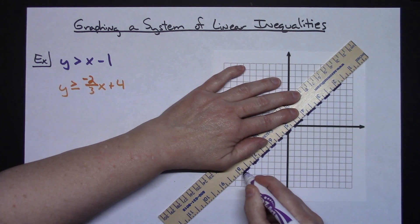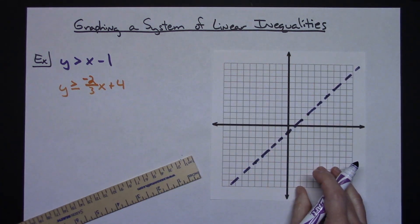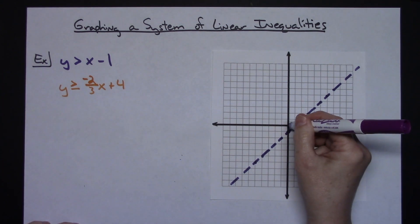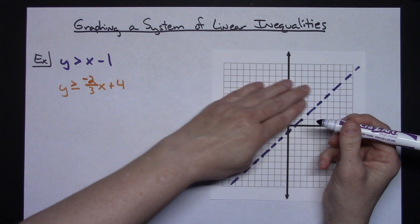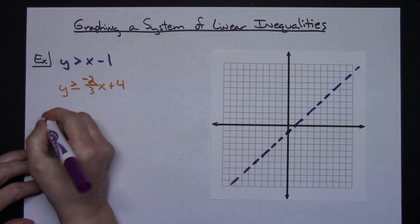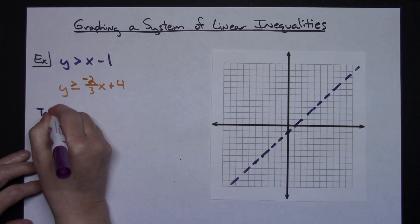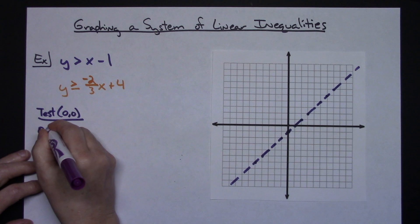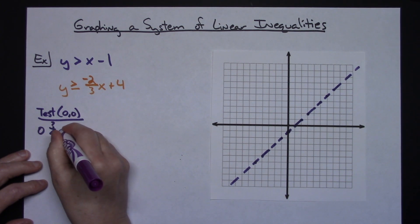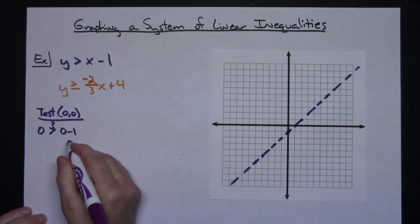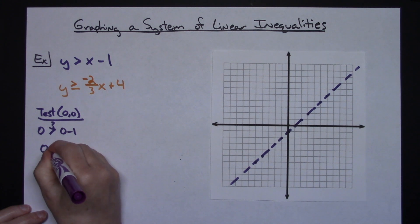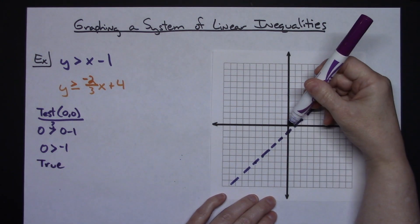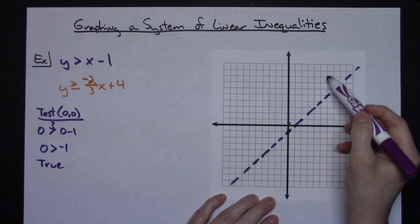When I put my ruler on there to make the dotted line, make it dotted enough so that people can tell it's a dotted line. Now we have shading to put on. I'm going to use the point (0, 0) to test — it's on this side of the line. I'll plug zero in for x and zero in for y: zero is greater than zero minus one, which gives us zero greater than negative one. That is a true statement.